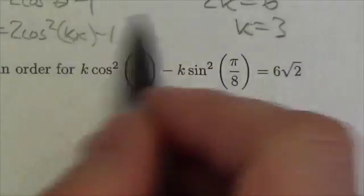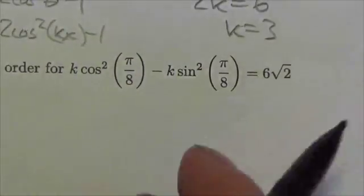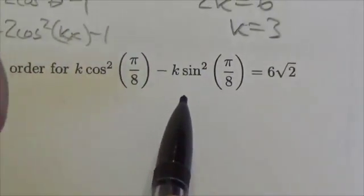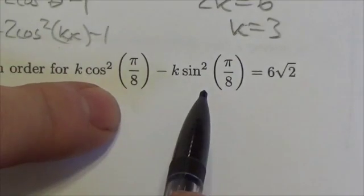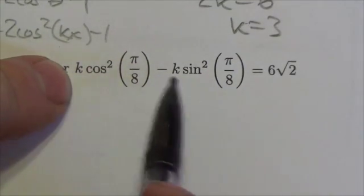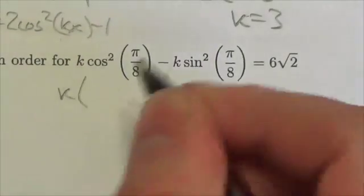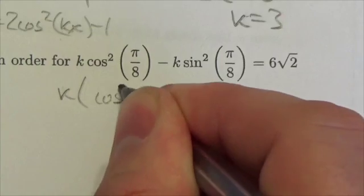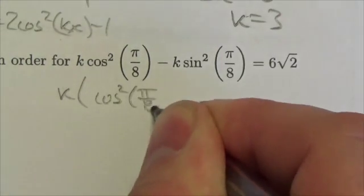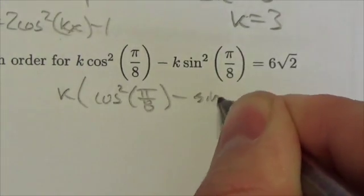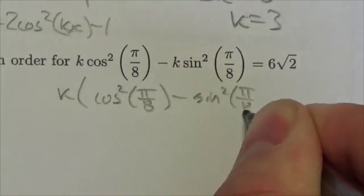I've got to tear this thing apart here, and I do see the structure of a double angle identity. There's a k common to both terms, so I'm going to factor that k out. That'll leave me with cos²(π/8) - sin²(π/8).